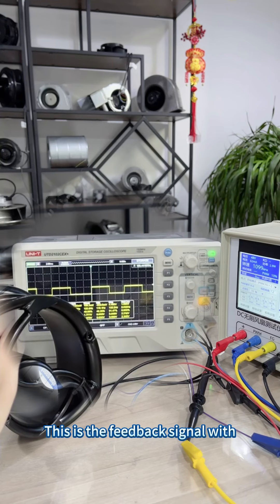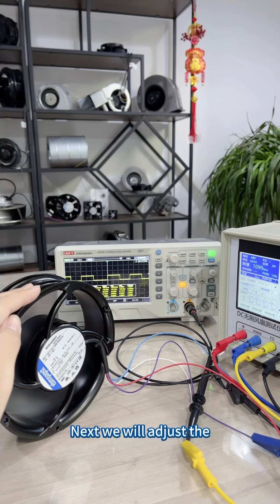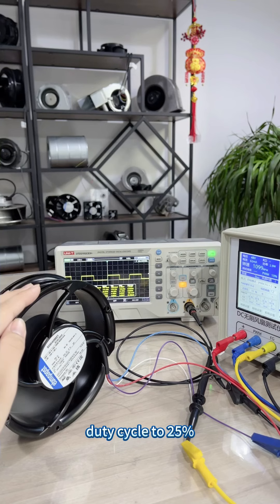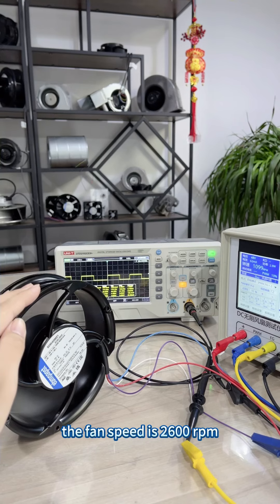This is the feedback signal with a duty cycle of 10%. Next, we adjust the duty cycle to 25%. Now, the duty cycle is 25% and the fan speed is 2600 RPM.